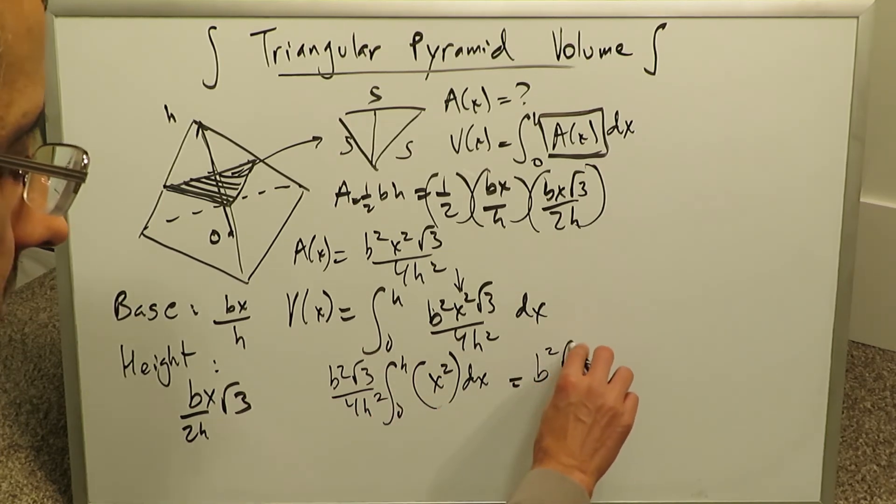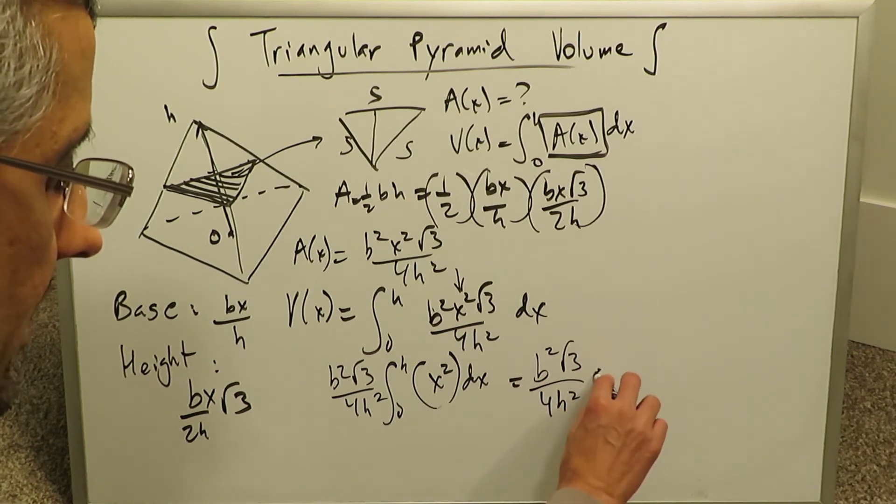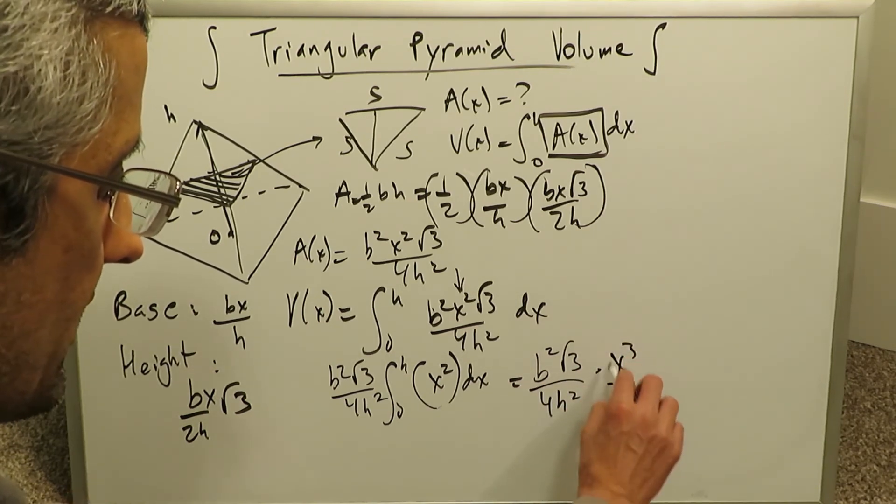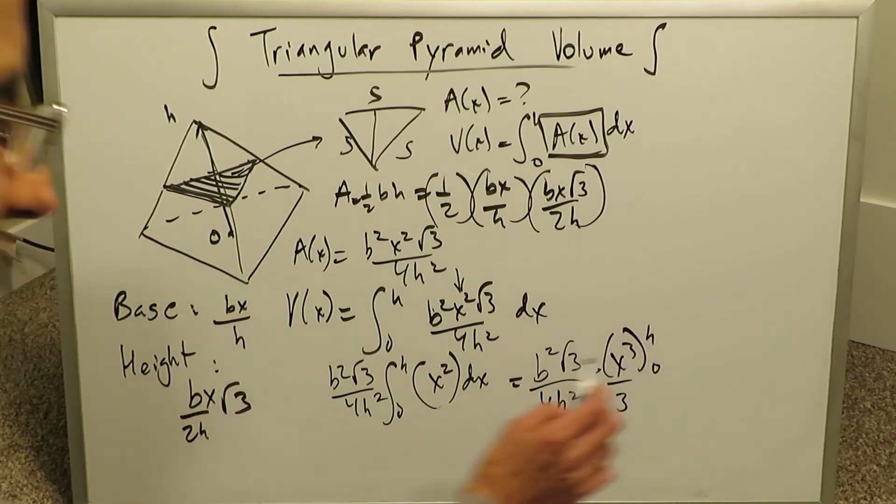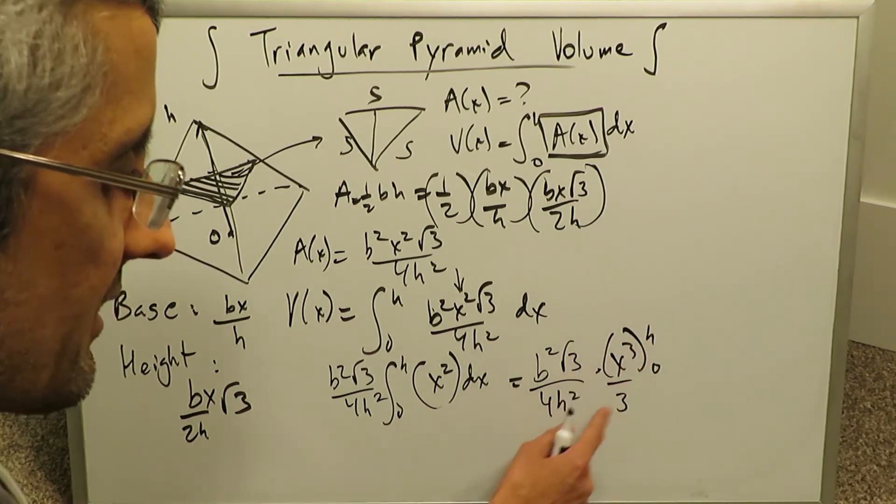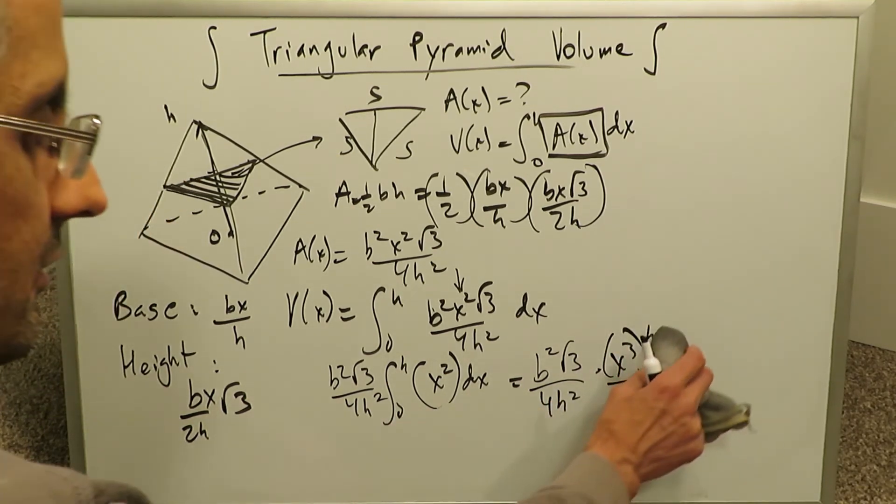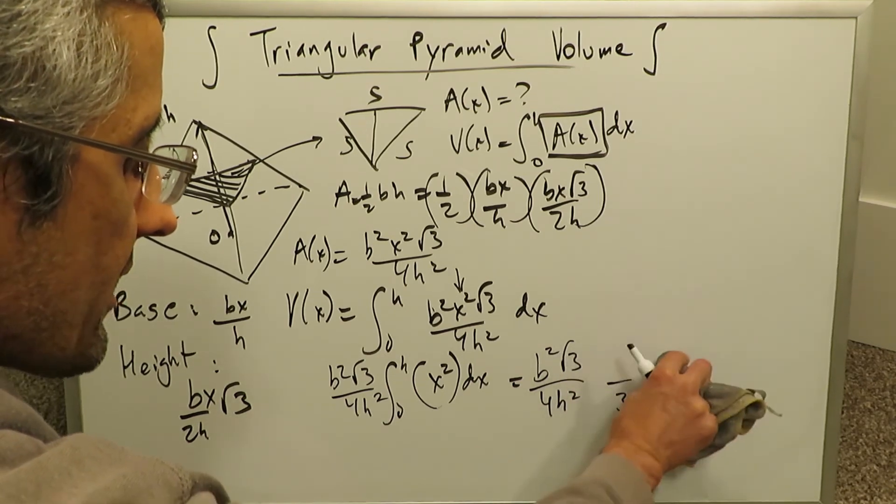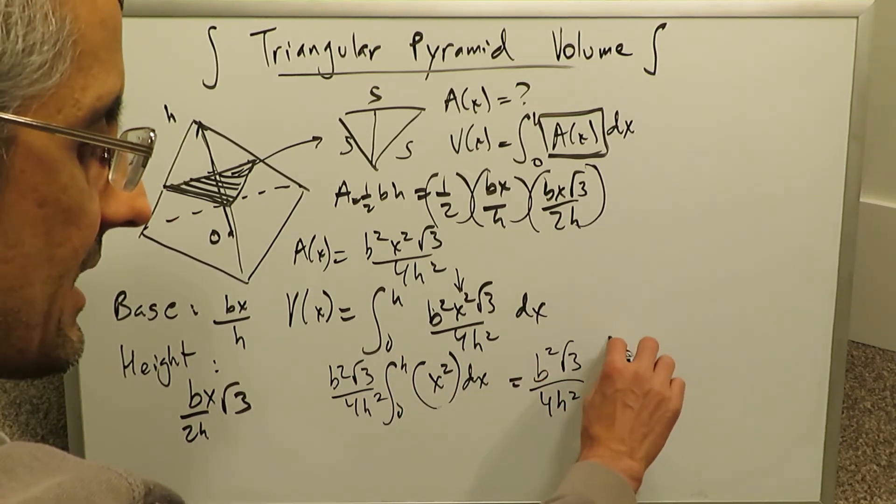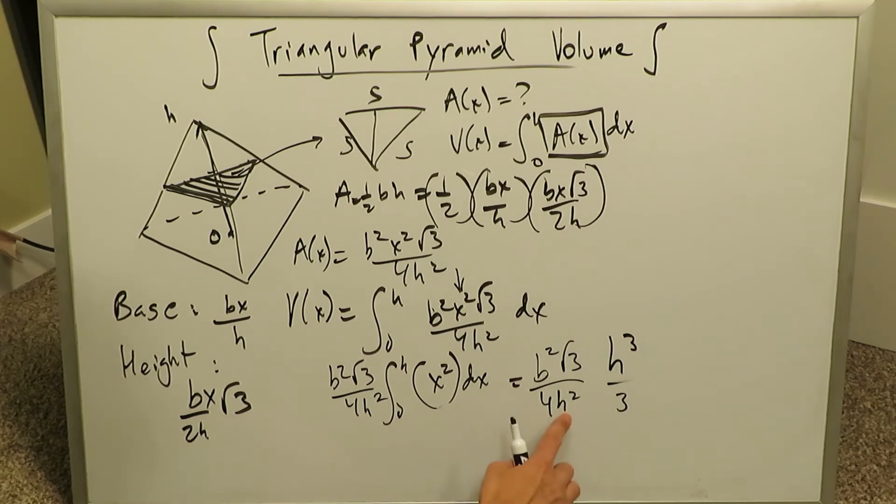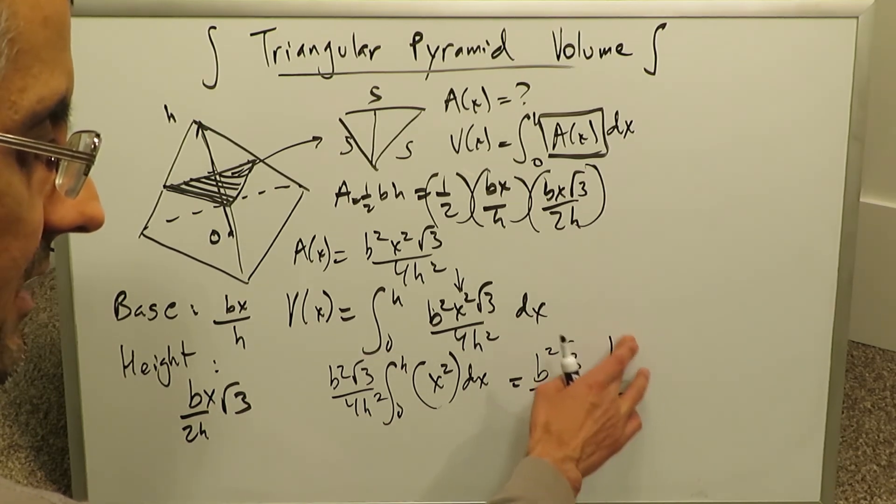We have B squared root 3 over 4H squared times X cubed over 3 from an upper limit H to a 0. You know when you compute this in terms of the definite integral, you'll basically get an H cubed over here because 0 is meaningless. I'm getting an H cubed.